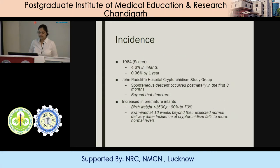Coming to incidence, it is seen in 4.3% of infants and by one year the incidence decreases to 0.96%. A study showed that spontaneous descent occurred postnatally after the first 3 months of age, but beyond that time descent is not seen commonly. It is more common in premature infants, especially with birth weight of less than 1,500 grams, at 60-70%. If these infants are examined beyond 3 months of their expected delivery date, the incidence falls to a more normal level.